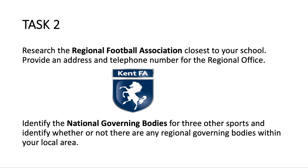For your next task, research the regional football association closest to your school and provide an address and telephone number for the regional office — there's a clue in the picture provided. Also identify the NGB for three other sports and determine whether or not they have any regional governing bodies in your local area — for example, does rugby have a regional governing body? Use that time to write down that information, and another lecture will be uploaded shortly.